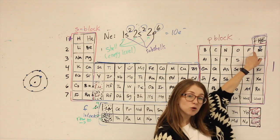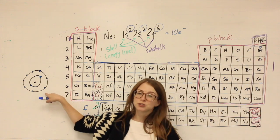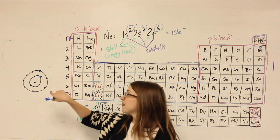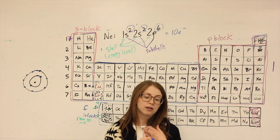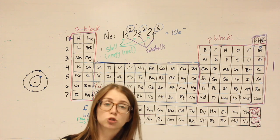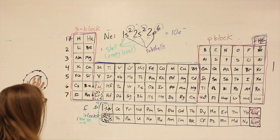Notice, I did neon. It's a noble gas. Its outermost shell is full. That's what makes all of the noble gases special. That's why we can use them as part of the noble gas shortcut. They have a full outer shell.